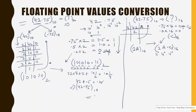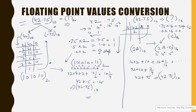Similarly, for converting 2A.C hexadecimal back to decimal: 2 × 16¹ = 32, A = 10 × 16⁰ = 10, and C = 12 × 16⁻¹ = 12/16 = 3/4 = 0.75. So 32 + 10 + 0.75 = 42.75 in decimal. This reverse check confirms our conversion was correct.